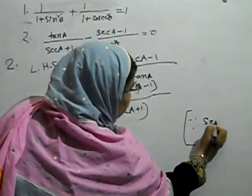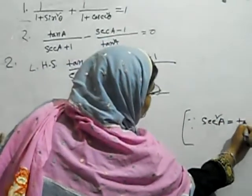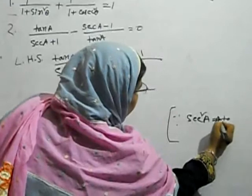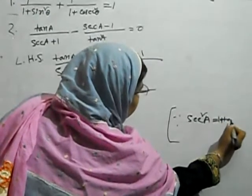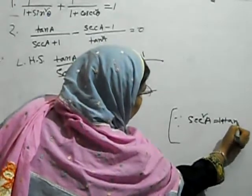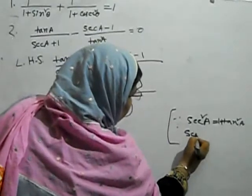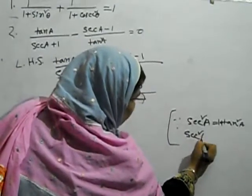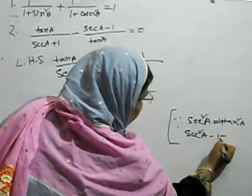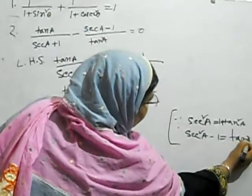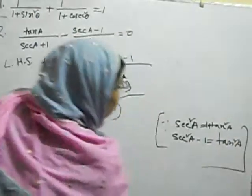sec squared A, 1 plus 1 plus tan squared A. tan squared A minus 1. tan squared A. 4, no. Minus tan squared Y.